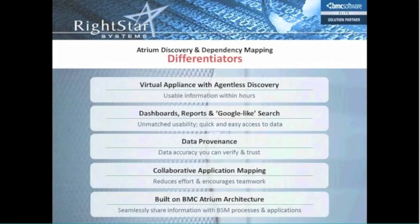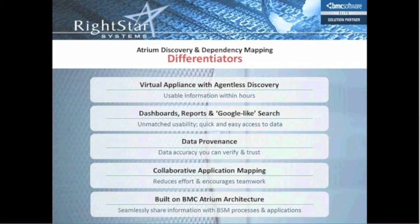What differentiates Atrium Discovery from other solutions in the marketplace? The first differentiator is that ADDM ships as a virtual appliance and it's agentless. Out of the box, we're providing an appliance that already has the operating system, the database, and Atrium Discovery already installed. You just give it the IP address, configure your discovery rules and scopes, and you're on your way. It's agentless, so we may require credentials to get into the Windows environment, Unix environment, or your SNMP devices — and once the appliance is seeded with that data, discoveries can take place.